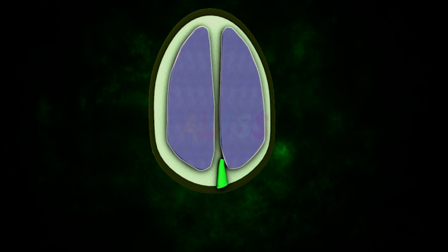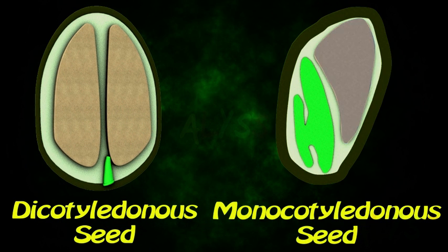If there are two cotyledons, then it is a dicotyledonous seed. And if one, then it is a monocotyledonous seed.